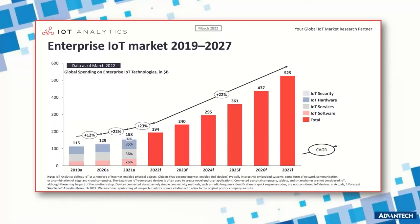According to IoT Analytics, they recently released a research report on global enterprise IoT spending from 2019 to 2027, published in March 2022. Overall enterprise IoT spending grew about 22 percent in 2021 to 158 billion US dollars. This resulted in increasing demand year to year, with an expected growth of around 22 percent projected from 2022 to 2027.